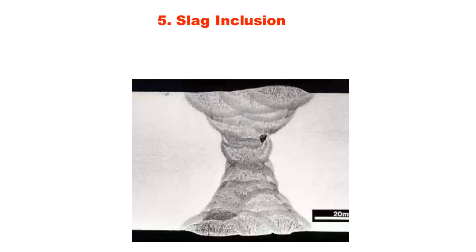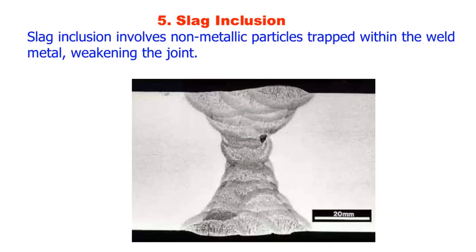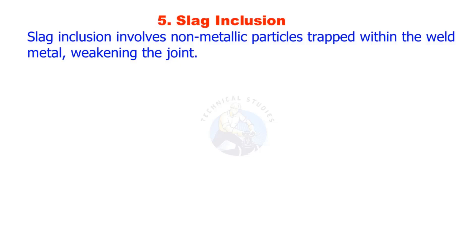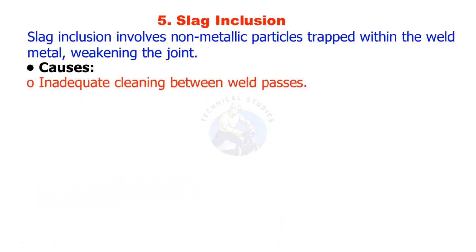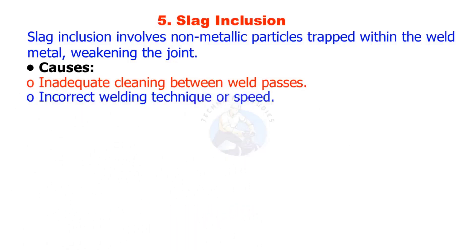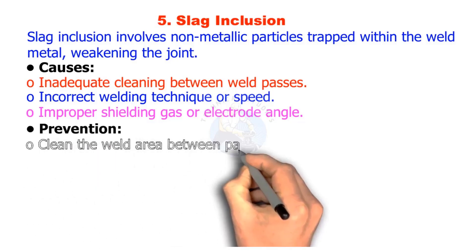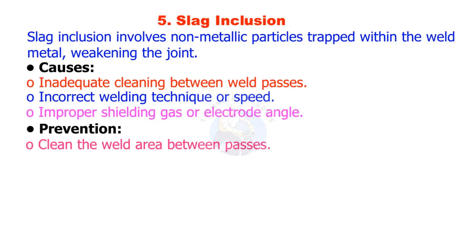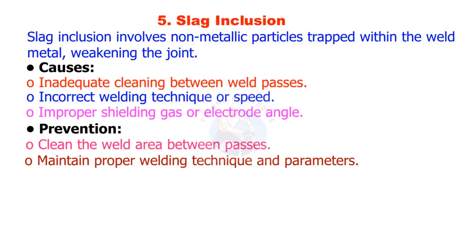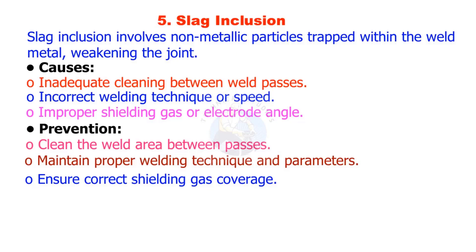Slag inclusion involves non-metallic particles trapped within the weld metal, weakening the joint. Causes include inadequate cleaning between weld passes, incorrect welding technique or speed, and improper shielding gas or electrode angle. Prevention: clean the weld area between passes, maintain proper welding technique and parameters, and ensure correct shielding gas coverage.